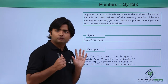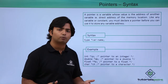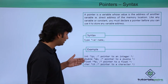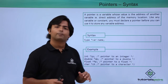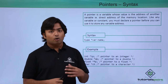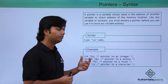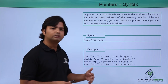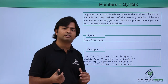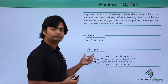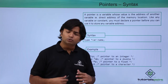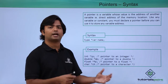You might wonder: if all pointers allocate the same block size and store an address, why do we specify the data type before the asterisk? In coming videos we will see that whenever we want to do arithmetic with pointer values, these data types are used as a scaling factor. For now, the syntax is: data_type* pointer_name, and you assign an address using the ampersand operator.